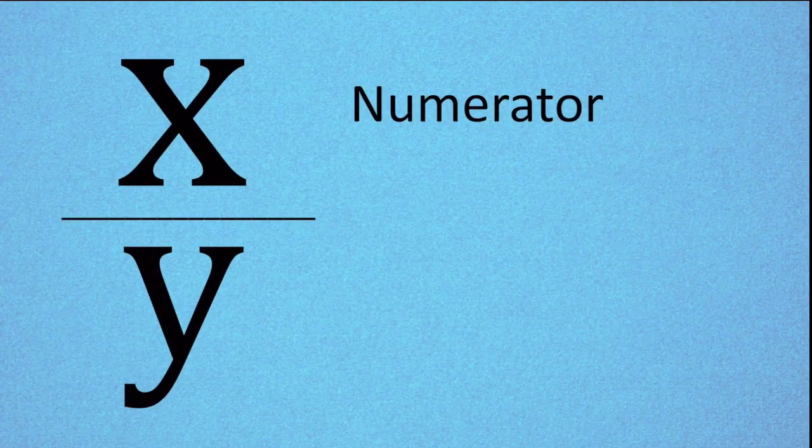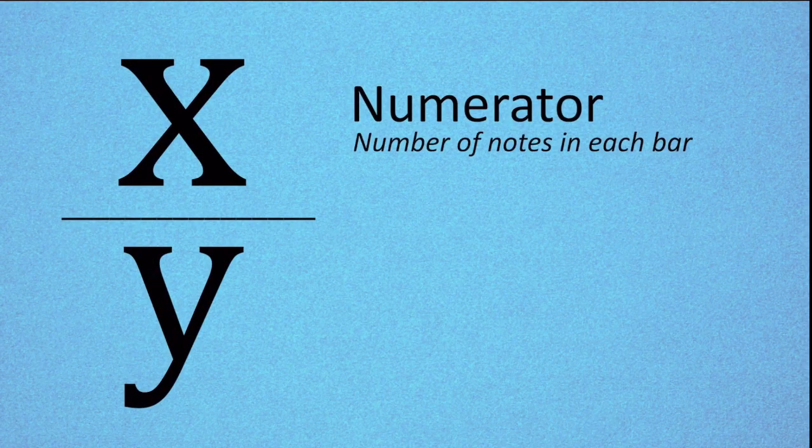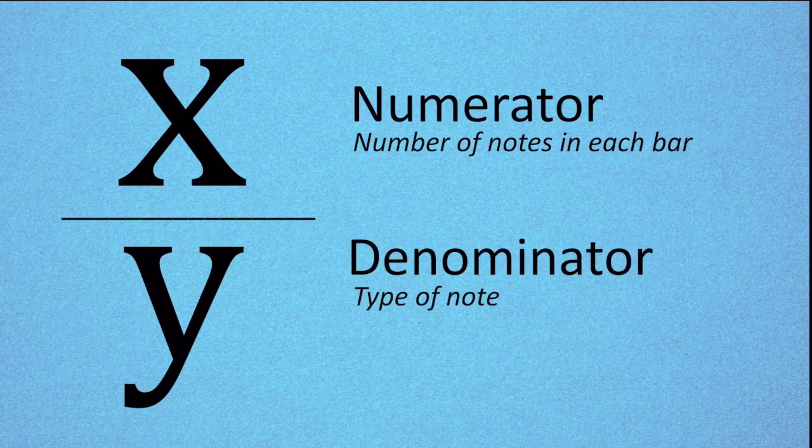The numerator tells the musician how many notes are in each bar, the denominator tells what type of note it is.